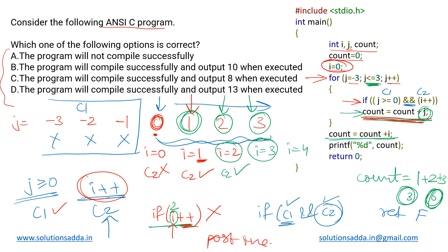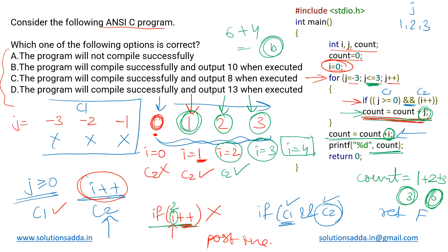After the for loop, a final line executes unconditionally — it adds the value of i to count. i is currently four and count is six, so adding four gives a final result of ten. What this code effectively did was add j for values one, two, and three to count, then finally add i which was four — making 1+2+3+4 = 10.